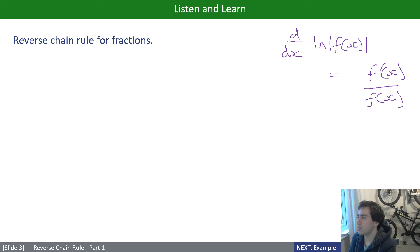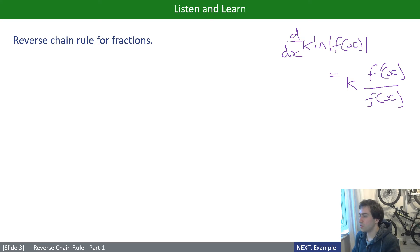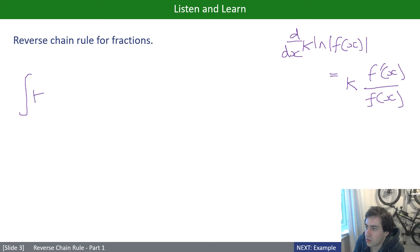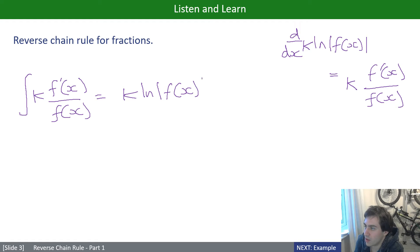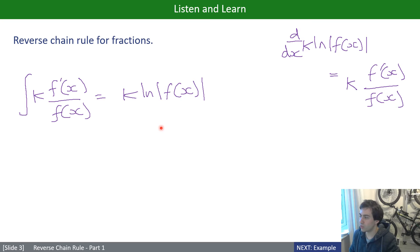ln(f(x)) has a derivative of f'(x)/f(x). Adding a constant K on the outside, we can also put K here because constants don't change the derivative when multiplying. So we can conclude: the integral of K·f'(x)/f(x) equals K·ln|f(x)|. This is the reverse chain rule for fractions — it lets you find the integral of a fraction where the numerator is the derivative of the denominator.